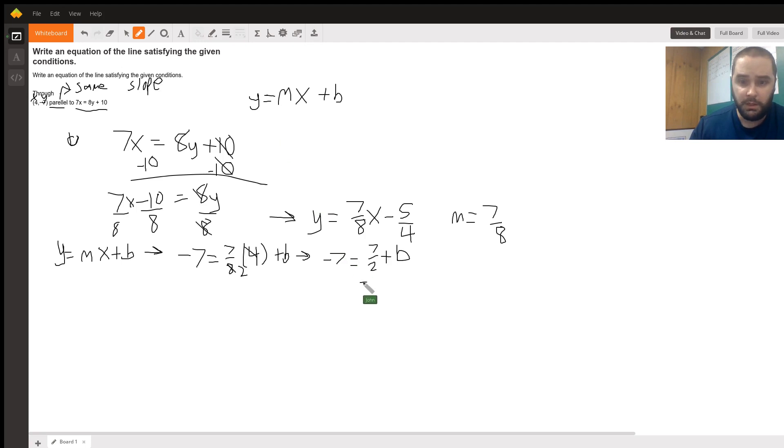And so if we subtract 7/2 from both sides, those cancel out. If we go ahead and get it into the same denominator, -7 is the same as -14/2 minus 7/2 equals b. -14 minus 7 would be -21/2.